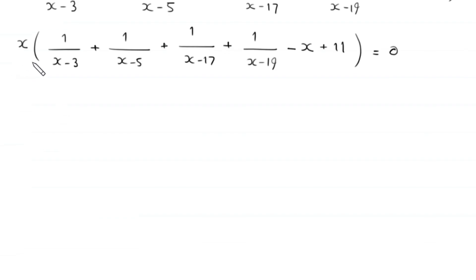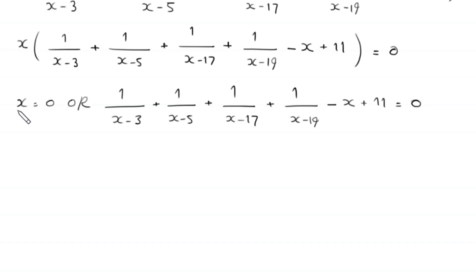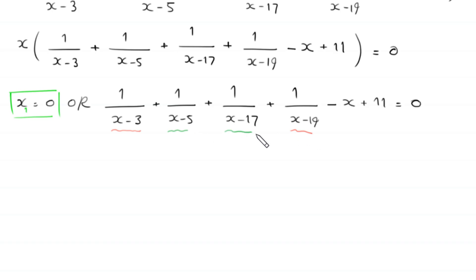Now from here, either x is equal to 0, or the expression 1 over (x minus 3) plus 1 over (x minus 5) plus 1 over (x minus 17) plus 1 over (x minus 19) minus x plus 11 is equal to 0. This is the first solution. Now from this expression, we combine 1 over (x minus 3) with 1 over (x minus 19), and 1 over (x minus 5) with 1 over (x minus 17).